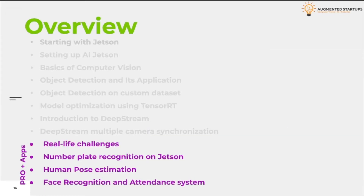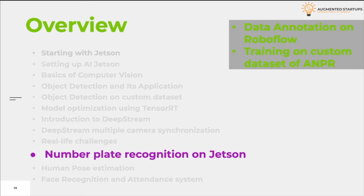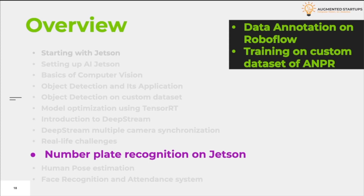In the last part of this course we will deploy different real-world AI applications on the Jetson — for example, number plate recognition, pose estimation, and attendance systems using face recognition. We will start with a discussion about different AI applications and their deployment on the Jetson, such as machine security, etc. The next interesting part of this module is learning how to annotate a dataset for object detection.